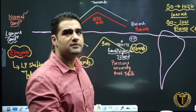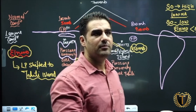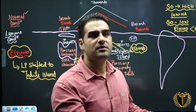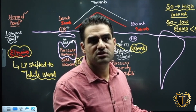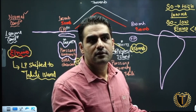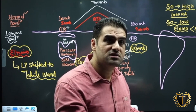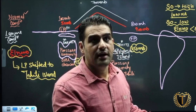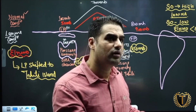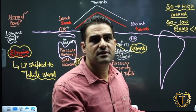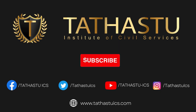In the exam, they will simply ask you about Southern Oscillation. Remember: high Southern Oscillation means La Niña; low Southern Oscillation means El Niño, which we call El Niño Southern Oscillation — ENSO. Make sure you understand these distinctions clearly.